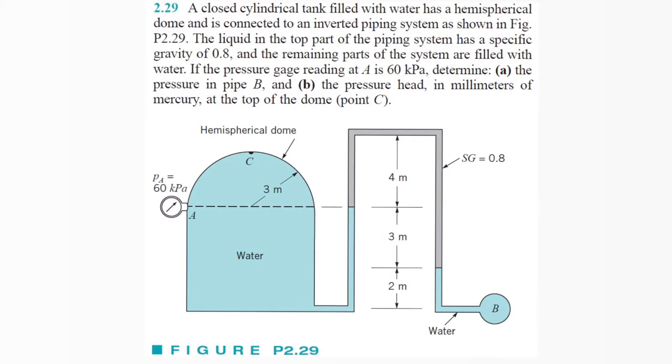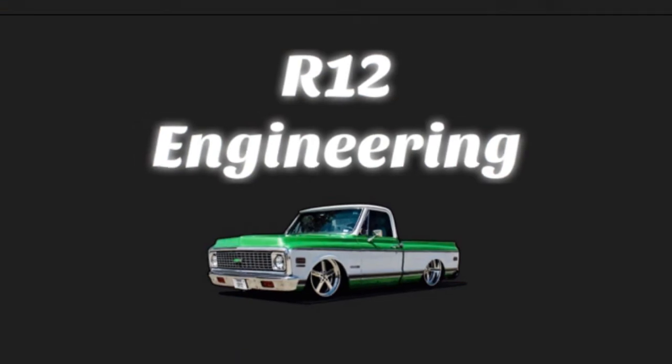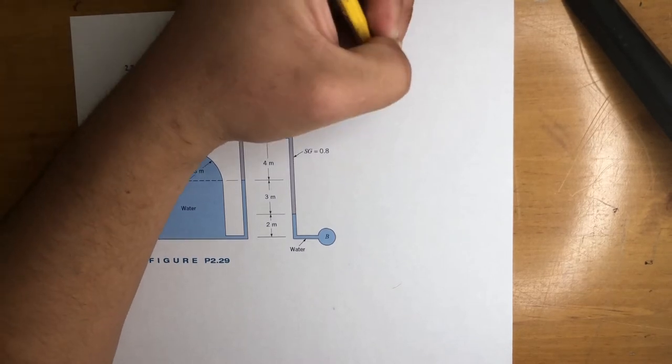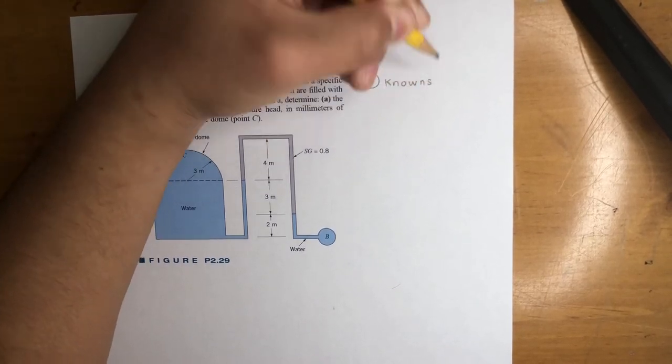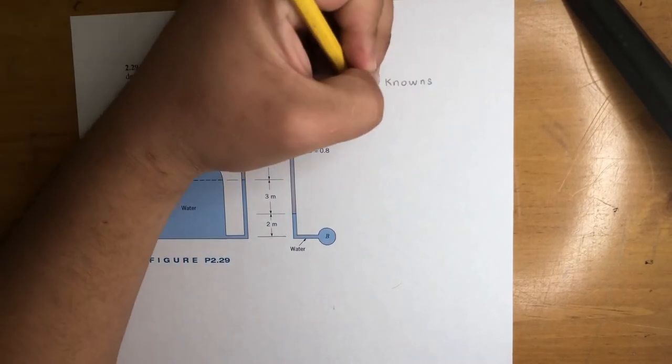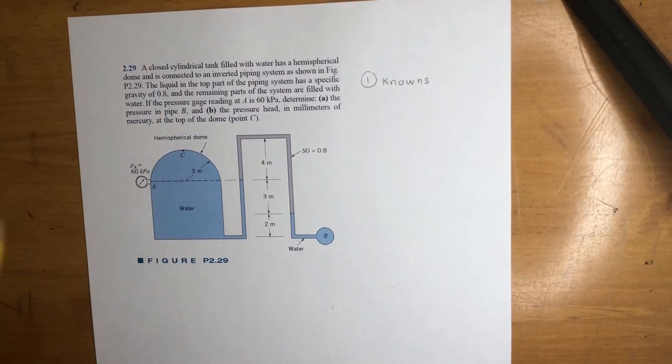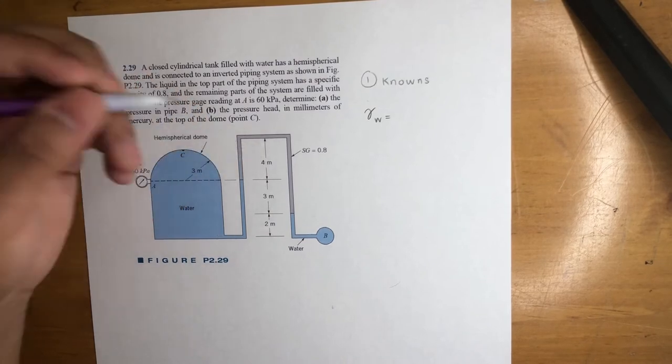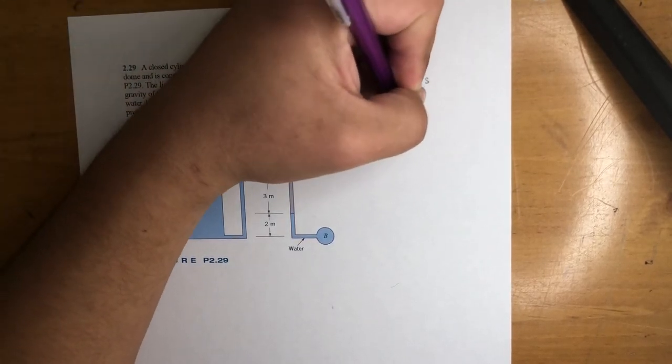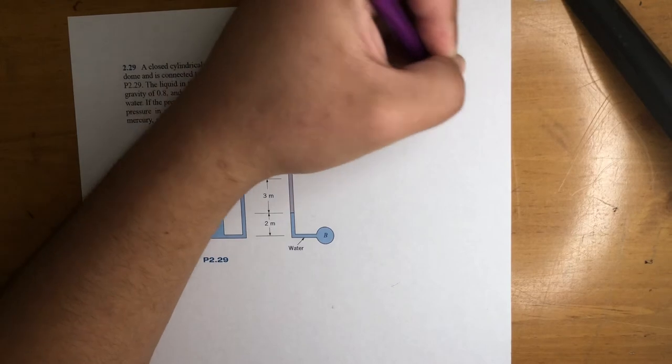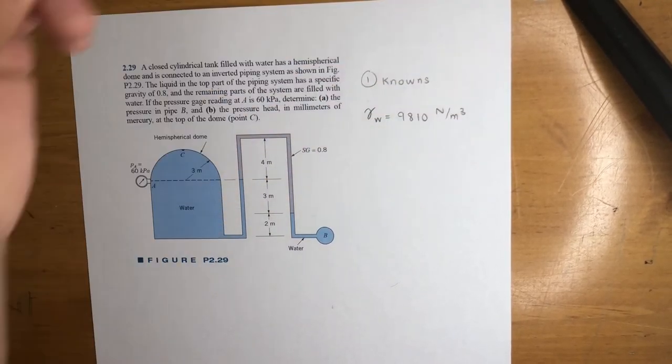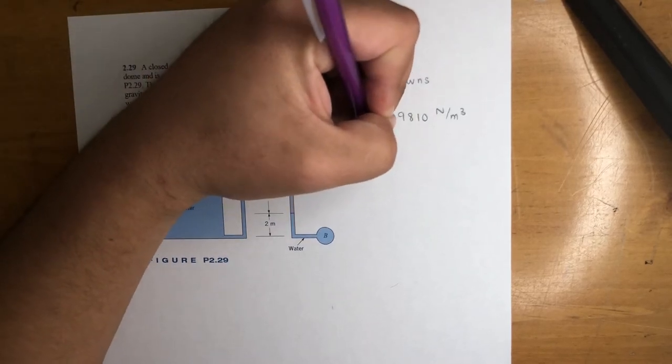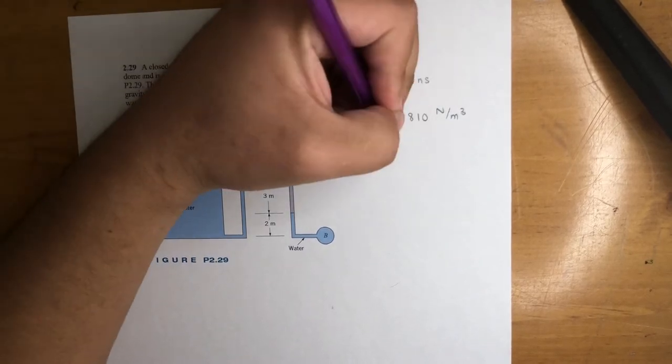First step, like always, is to identify your knowns. We're dealing with water, so the specific weight for meters and kilopascals is 9810 Newtons per meter cubed. We got specific gravity of the fluid equal to 0.8.